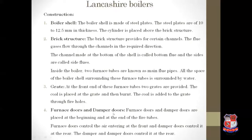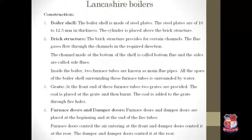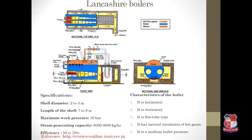Furnace doors and damper doors are placed at the beginning and end of the fire tube. Furnace doors control the air entering at the front, and damper doors control the air at the rear end of the boiler.